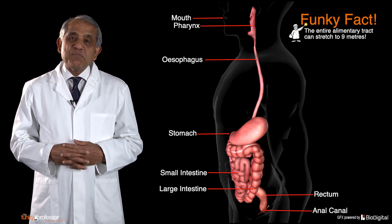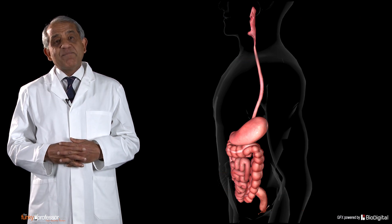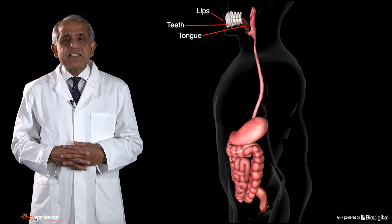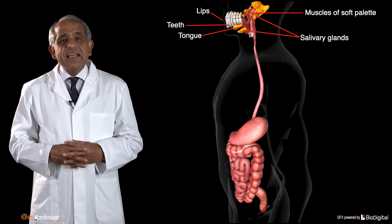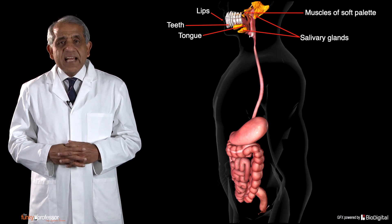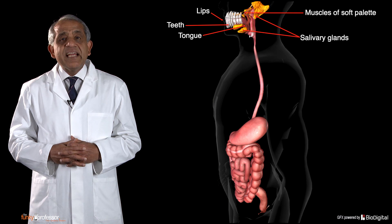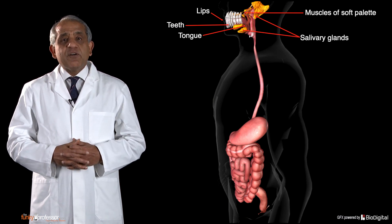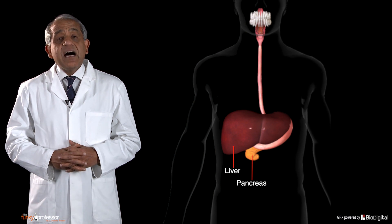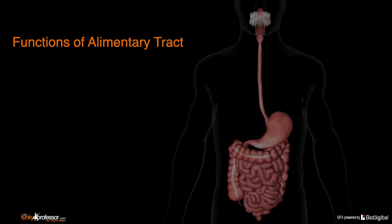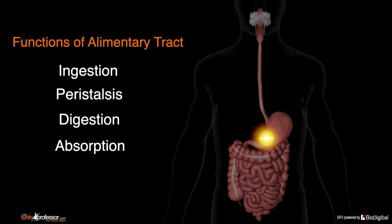Associated with the alimentary tract are numerous important structures: the lips, the teeth, the cheeks, the tongue, the palate, and the salivary glands — all in or around the oral cavity. The salivary glands perform a very important function in lubricating ingested food and commencing the process of digestion of carbohydrates. In the abdominal cavity, the important associated glands are the liver and the pancreas. The functions of the alimentary tract can be summarized as ingestion, peristalsis, digestion, absorption, and eventually evacuation of unused food.